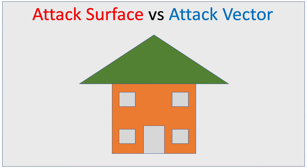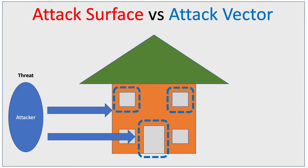So I actually have a house here. First of all, an attack vector — what is that? So, we have our attackers on the outside, our threats. And what they're trying to do here is they're trying to break into the house. So, an attack vector here would be, for example, the window or the door. Basically, a means of gaining unauthorized access into our house. And that's essentially what an attack vector is.